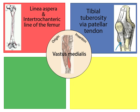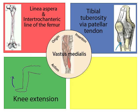The tendon attaches to the tibial tuberosity, indicated by the blue arrow. Click the action button in the green square. Unlike the rectus femoris, the vastus medialis crosses only the knee joint and creates knee extension.